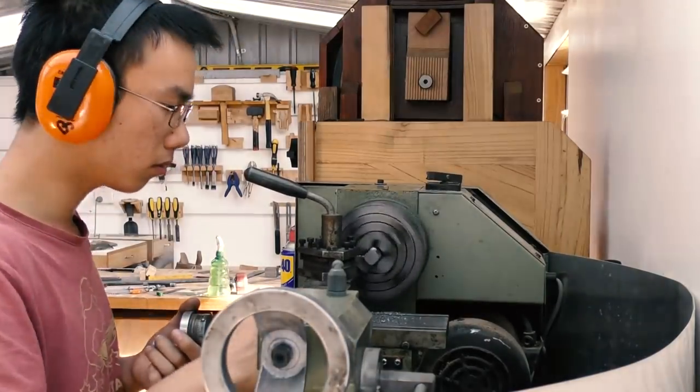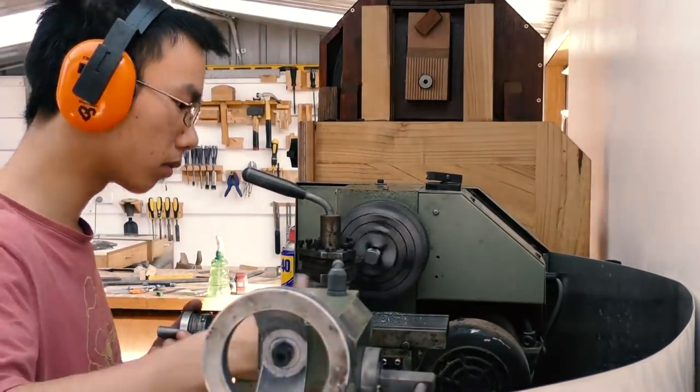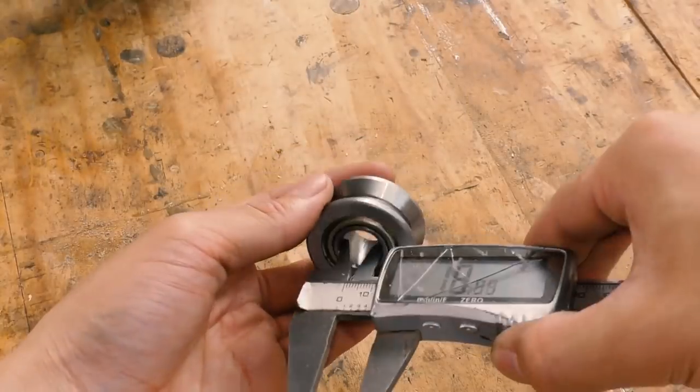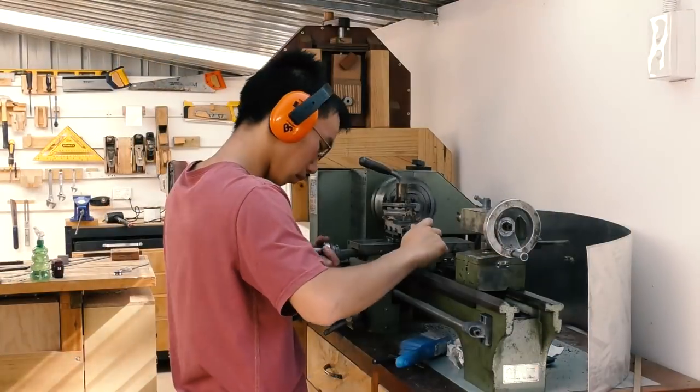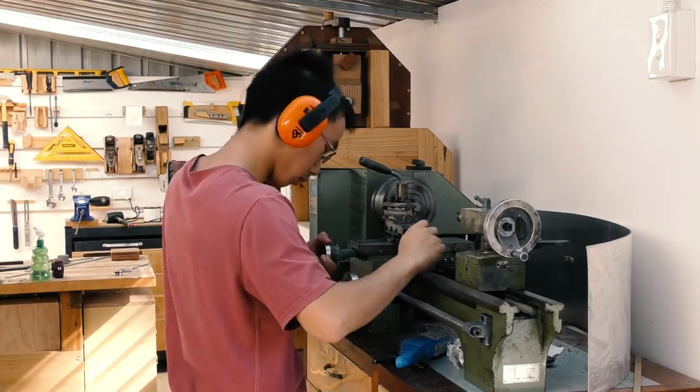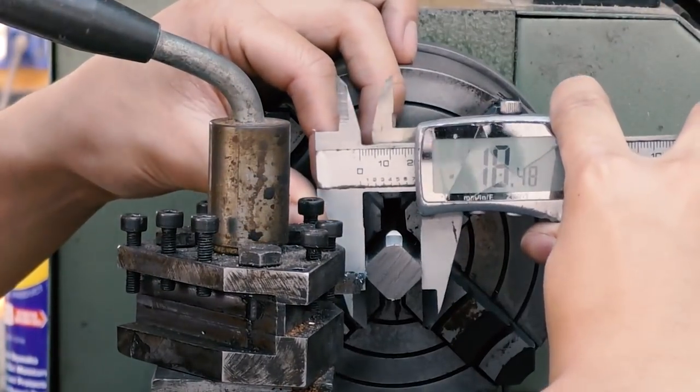From my attempts, I kind of generalized a few rules when trying to turn a piece of metal to fit the bearing. Firstly, always triple make sure the inner diameter of the bearing. Secondly, always remember that any movement in the cross slide translates to twice of that in the diameter of the stock.